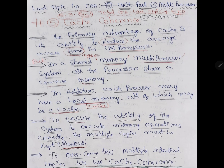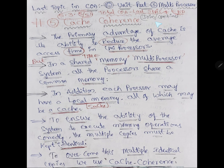Now we will see the course content. The primary advantage of cache is its ability to reduce the average access time. When access time is reduced, the data will come fast. So the speed will increase in a uniprocessor, which means a single processor. Whereas now we are discussing about multiprocessors, used in big companies, workstations, YouTube companies in real time.